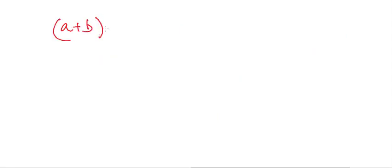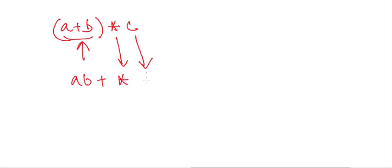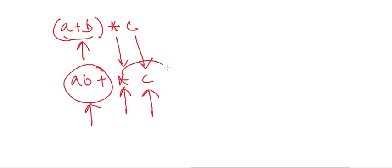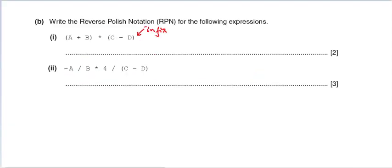What if we have something like (A plus B) star C? We solve the bracket first, so A plus B becomes AB plus. Then comes the star, then C. We now have an operator between the bracketed part and variable C, so it moves to the right. Our final answer is AB plus C star.